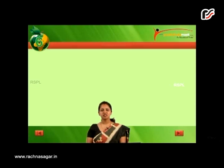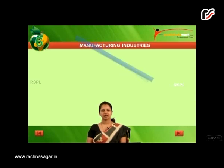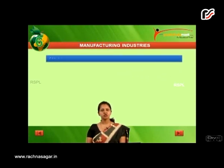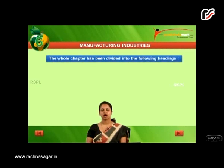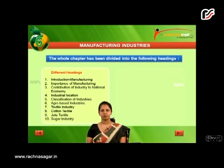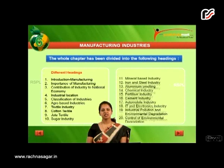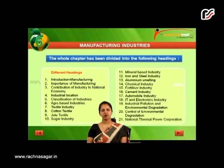Let us move to the next chapter of geography, that is Manufacturing Industries, which is chapter number 6 according to the NCERT book. This chapter is divided into the following headings.